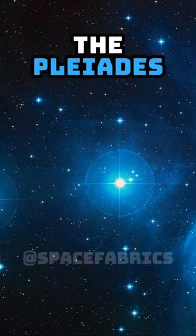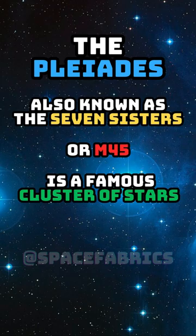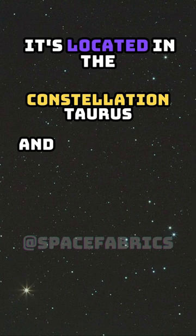Pleiades, also known as the Seven Sisters or M45, is a famous cluster of stars easily visible to the naked eye. It's located in the constellation Taurus and is one of the closest star clusters to Earth.